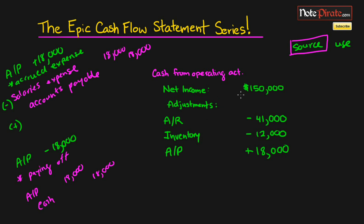We don't have any other current liabilities to adjust for. In the next tutorial, we'll finish off the non-cash expenses and then we'll be done with the operating activities section.